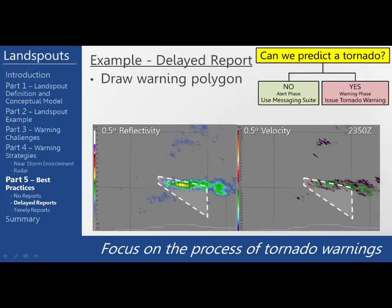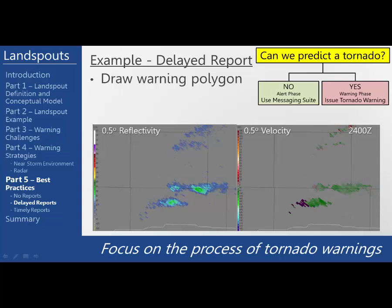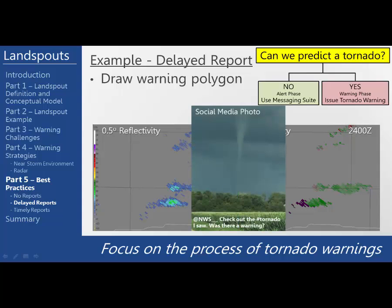We still haven't received any reports, and by 2400 Zulu the storm appears to be weakening as it moves off the boundary. However, also at this same time, we see a delayed report on social media directed to our office of a funnel cloud with a caption that says, 'Check out the tornado I saw. Was there a warning?' This is an increasingly common occurrence these days since everyone has a phone in their pocket and access to instant communication.